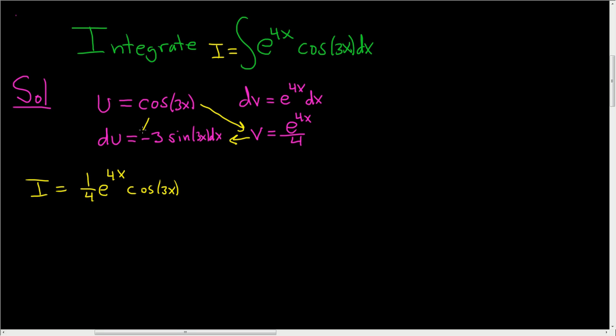Minus the integral of vdu. So I said minus but we already have a minus, so it's going to be plus. And it looks like we have a 3 and then we have a 4 on the bottom, so 3 over 4 e to the 4x sine of 3x dx. Now I intentionally left the 3 fourths inside. You can pull it out, but I find that in these types of problems if you leave it in in the first step, it just makes it much cleaner.